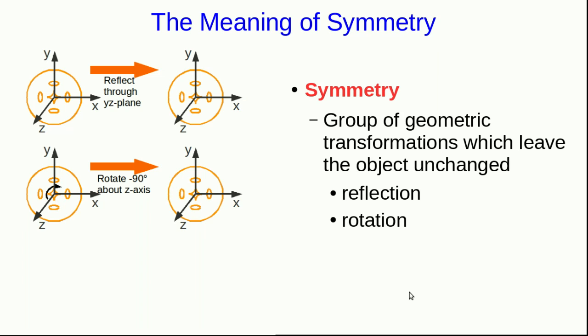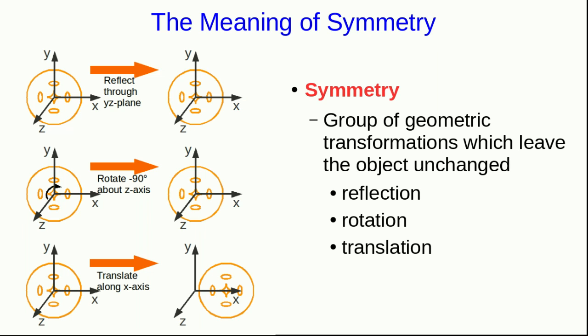Often it's useful to refer symmetries to a set of axes. So for this set of axes that I've just defined, I could say that this alien happy face is symmetric under reflections through the Y-Z plane, and rotations about the Z axis. But the real reason I just introduced axes as a way of talking about symmetry is so that I can talk about one more type of symmetry, which this alien happy face doesn't have, and that's translational symmetry. If we translate the happy face along the x-axis, now it's changed. It's in a different location from where it was before, and that counts as a change. So this happy face does not have symmetry under translations.